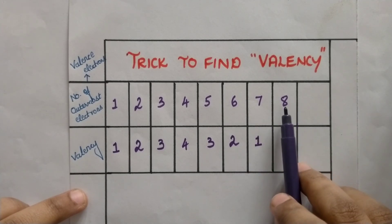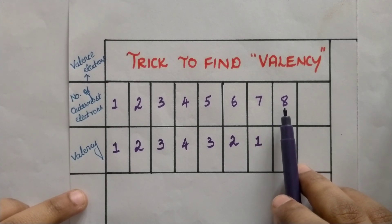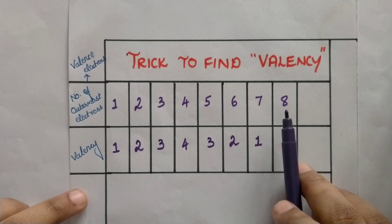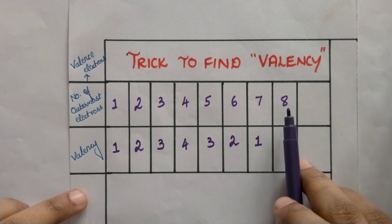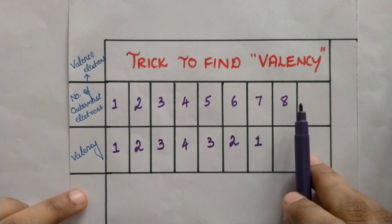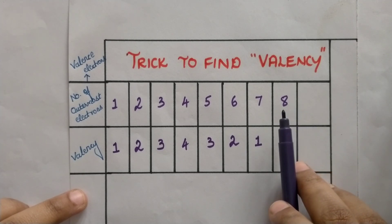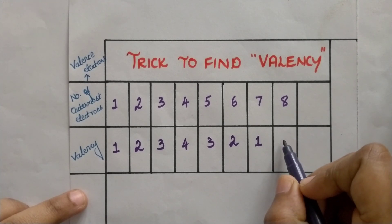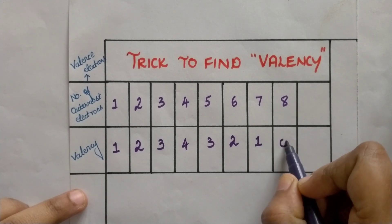Finally, for an element with 8 electrons in its outermost orbit, it is already in the octet configuration and is in a stable state. It will neither lose nor gain electrons. So the valency becomes 0.